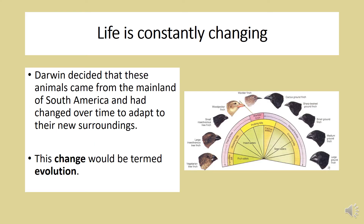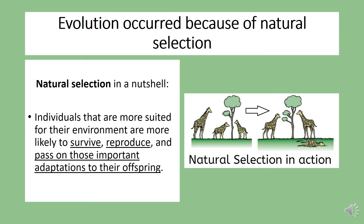Darwin decided that these animals came from the mainland of South America and had changed over time to adapt to their new surroundings. This change is termed evolution. This change — also known as evolution — occurred because of natural selection. Natural selection is when individuals that are more suited for their environment are more likely to survive, reproduce, and pass on those important adaptations to their offspring.